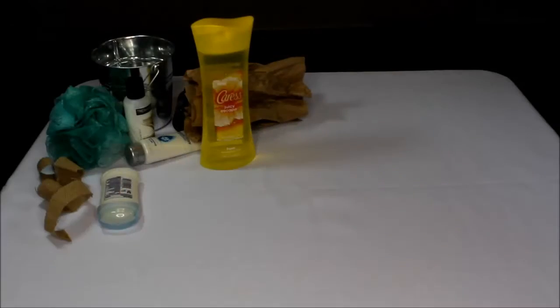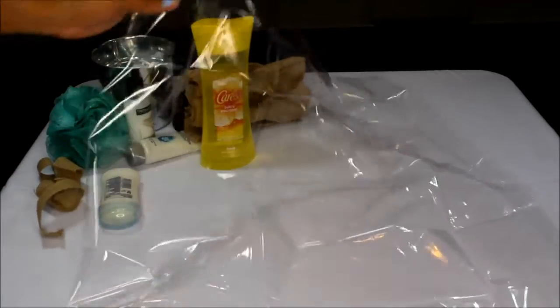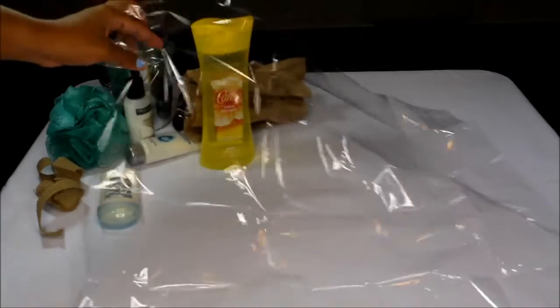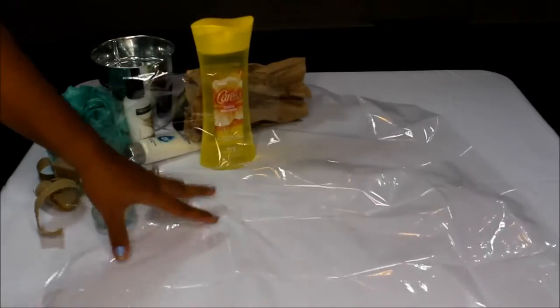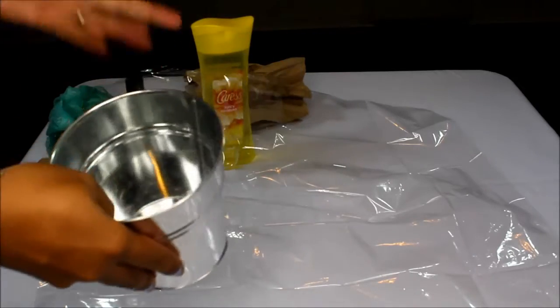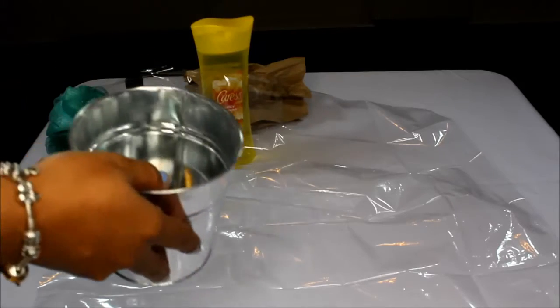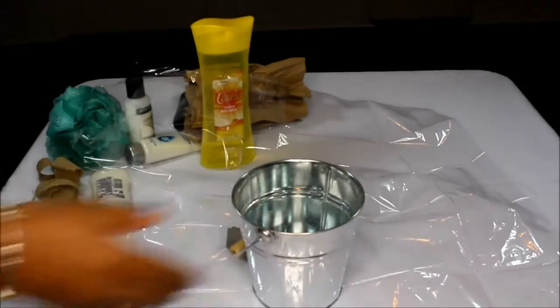Okay guys, so to start off what I did was I pre-cut these little baggies in half because it was just way too big for the little basket that I had. So you just pre-cut that and you take your bin or whatever pail or thing you want to use and you set it in the center.